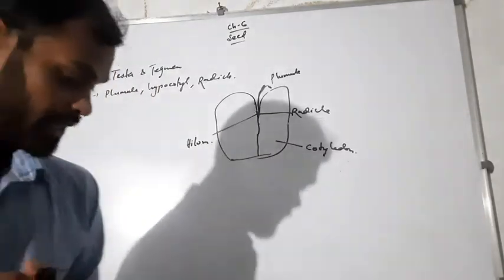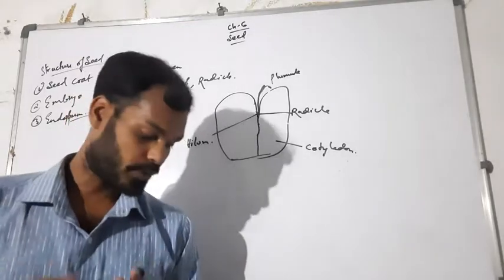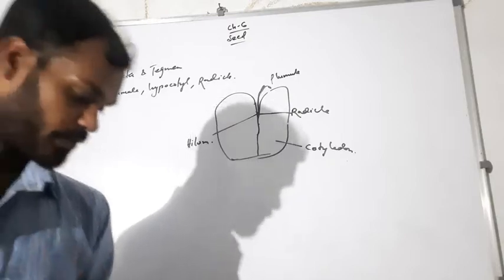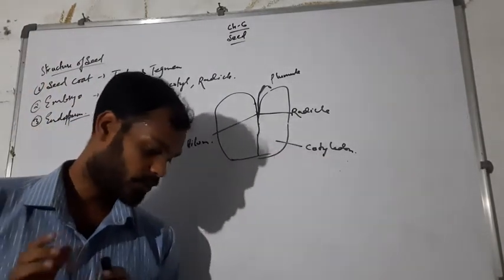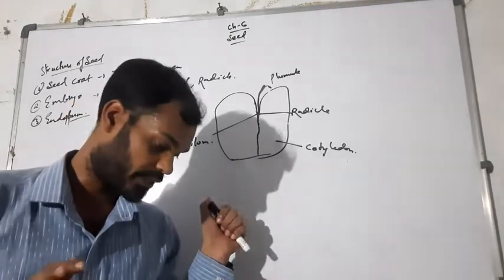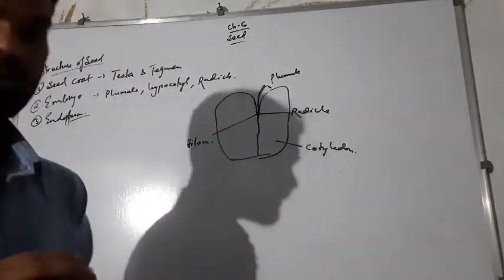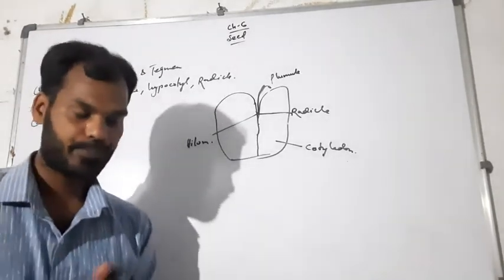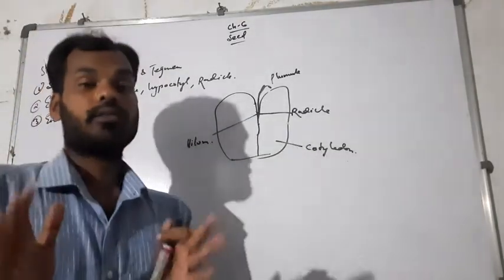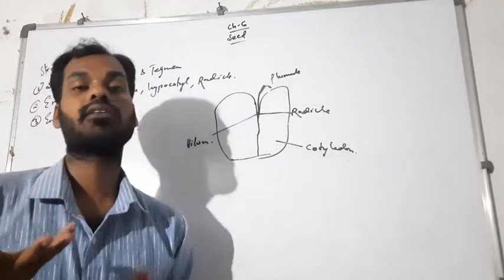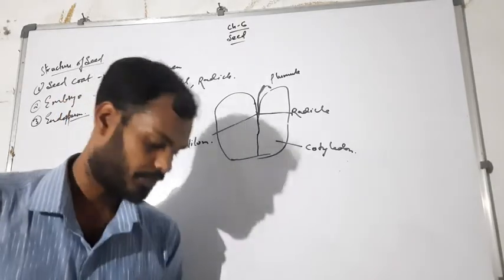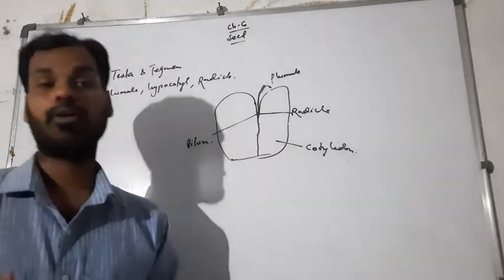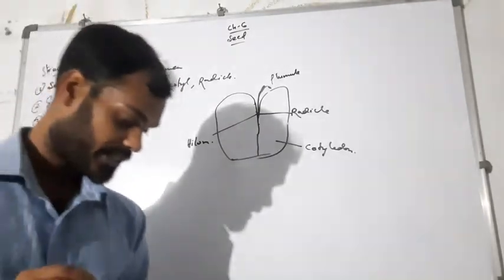Based on the presence or absence of endosperm, seeds are classified as endospermic and non-endospermic. In endospermic seeds — found in some dicots and monocots — food is stored mainly in the form of endosperm; these are also called albuminous seeds. In non-endospermic seeds, the food is completely used up during germination. Examples of non-endospermic seeds are pea, gram, and lentil.